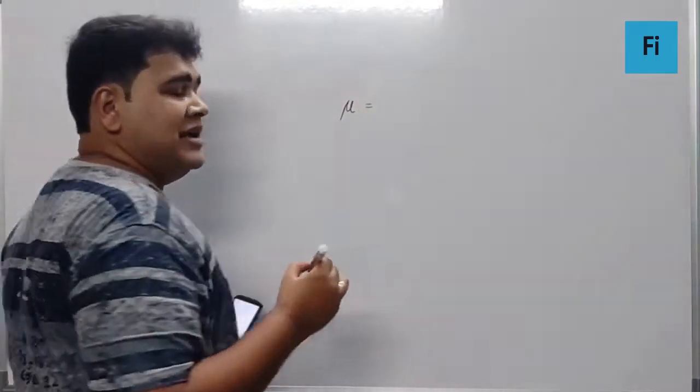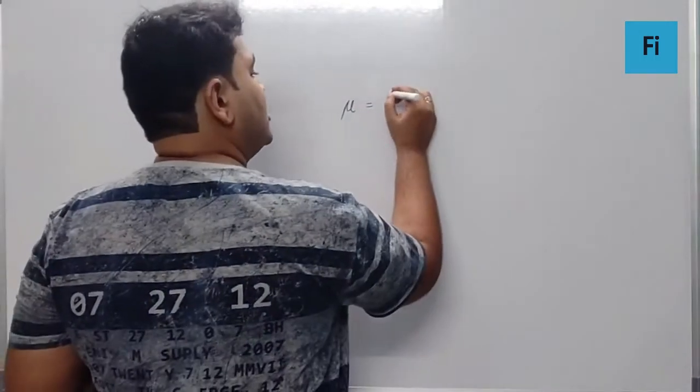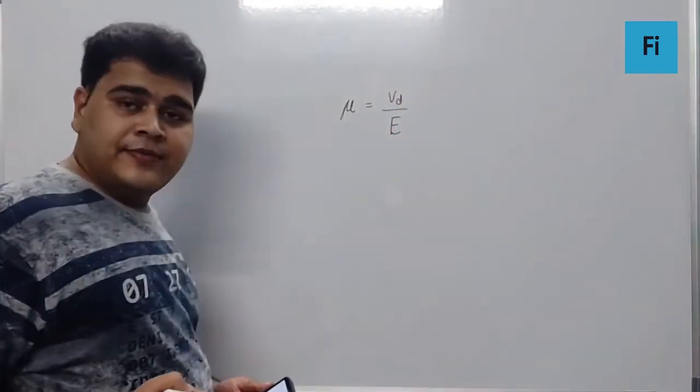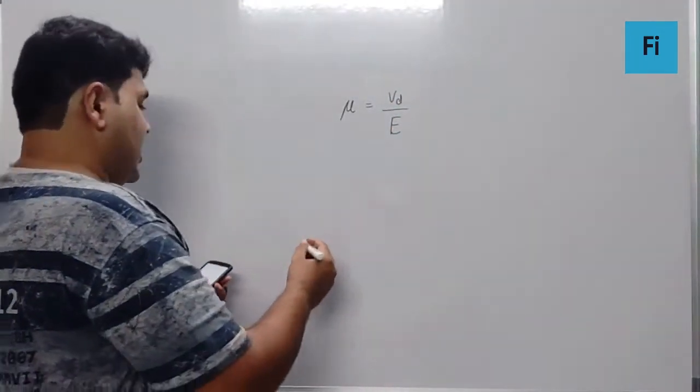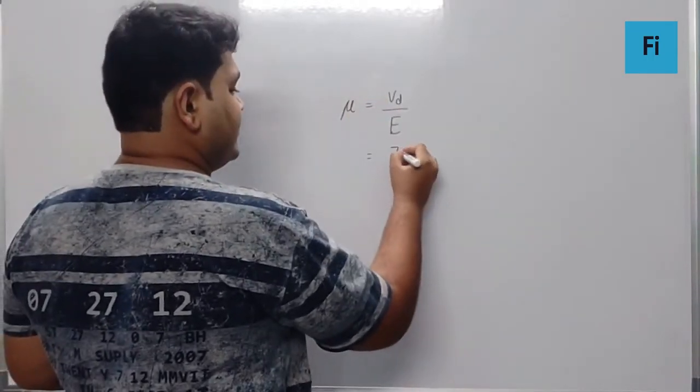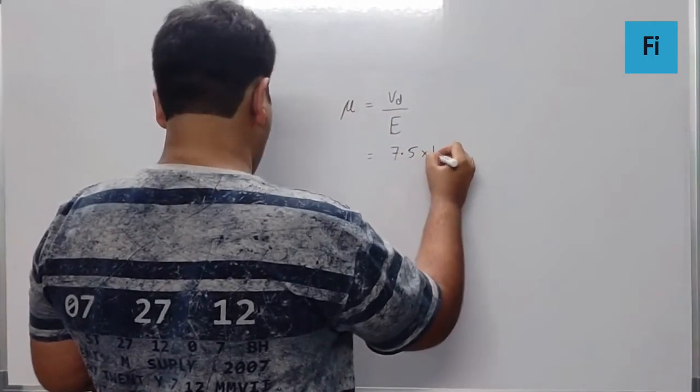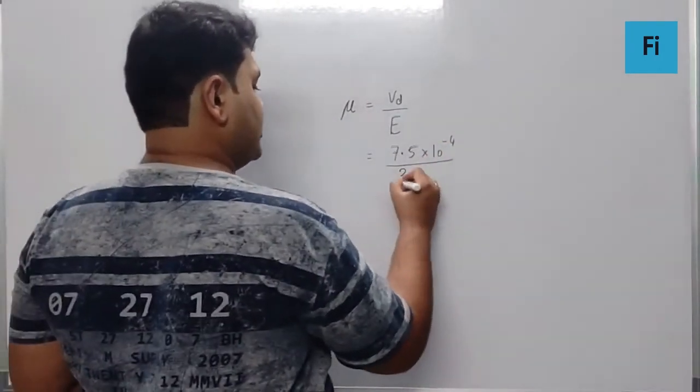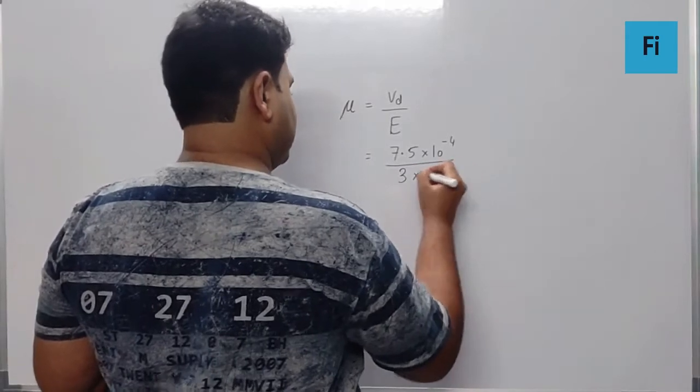The mobility is actually given by the formula: drift velocity per unit electric field. That means we can write the drift velocity given over here as 7.5 × 10^-4 divided by 3 × 10^-10.